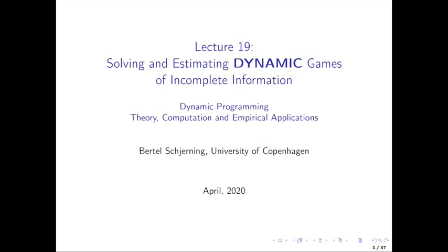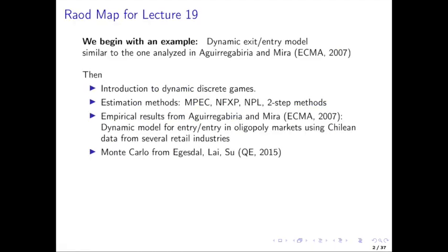In solving and estimating dynamic games of incomplete information, we're going to start with an example first and introduce the key leading example we're going to use throughout this lecture: the dynamic exit/entry model of Aguirregabiria and Mira. We'll start with a stylized version of it and then build up the entire behavioral framework and give an introduction to dynamic discrete games, including notation.